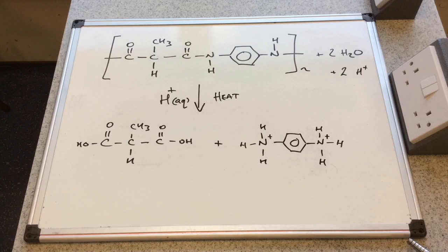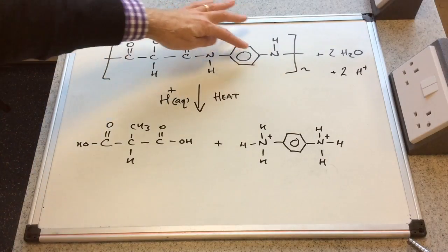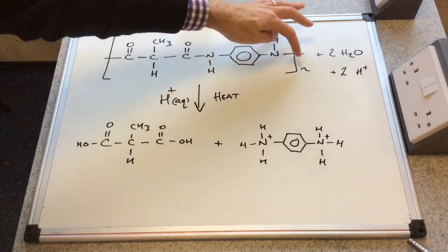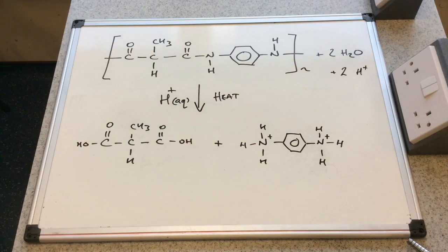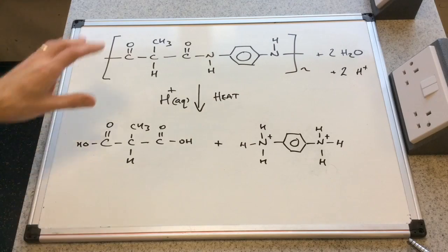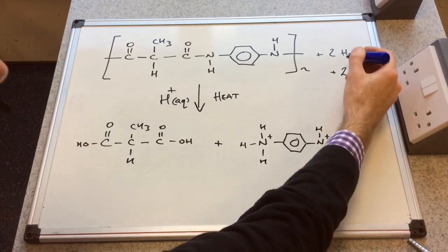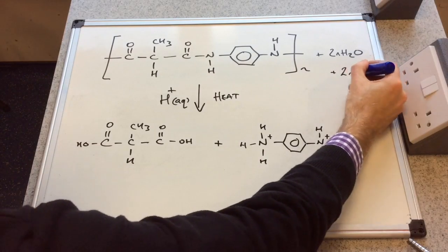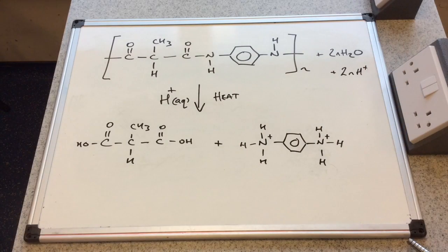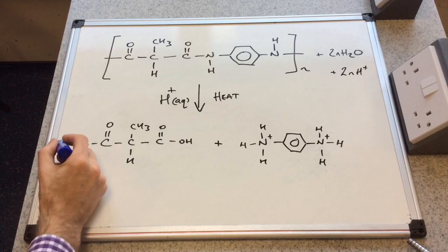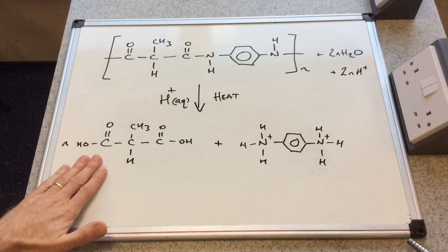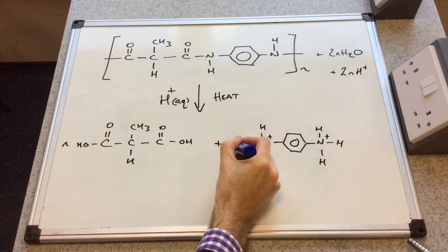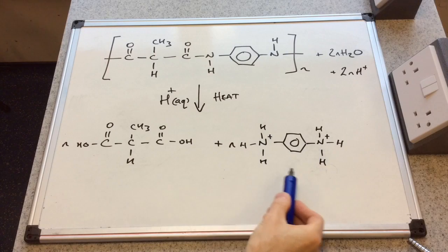So we'll just finish by turning it into a balanced chemical equation because it's not balanced at the moment and that's because we haven't just got one repeat unit here. We've got N of them. And so therefore N repeats will require two N water molecules, two N H plus ions, and that will create N moles of this dicarboxylic acid and N moles of this diammonium ion.